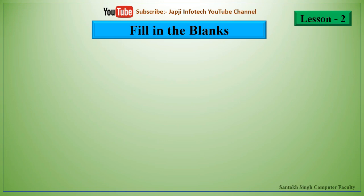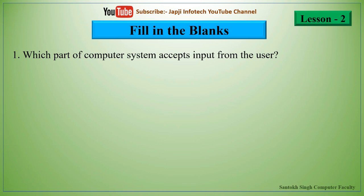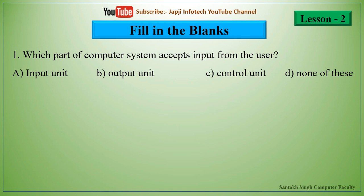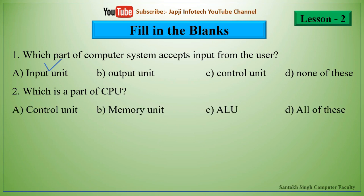We will now learn about fill in the blanks in lesson 2. The first one is: which part of the computer system accepts input from the user? The right answer is the input unit. The second one is: which is a part of CPU? The options are control unit, memory unit, ALU, or all of these. The right answer is all of these — control unit, memory unit, and ALU are all parts of the CPU.